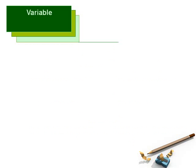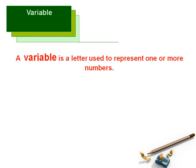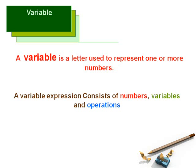We shall now define variables. A variable is a letter which can represent one or more numbers. Its value is not fixed. A variable expression, like a numerical expression, consists of both numbers and operations along with the variables.